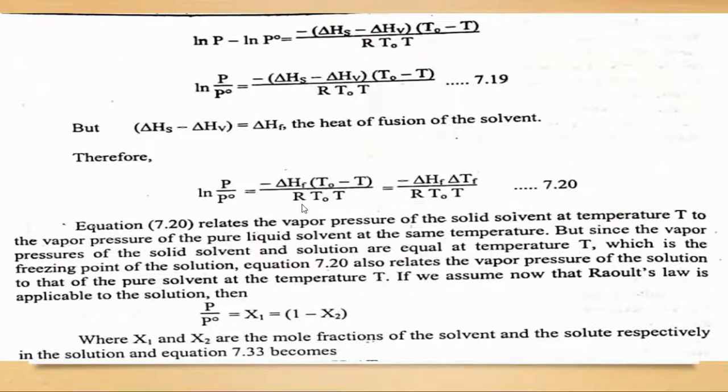This will be of freezing, divided by R × (T_not - T)/(T_not × T). This equation relates the vapor pressure of the solid solvent at temperature T to the vapor pressure of the pure liquid solvent at the same temperature.